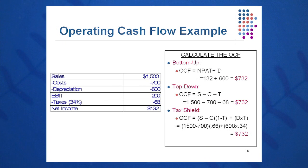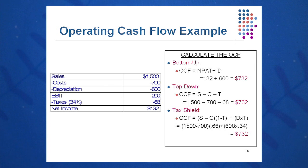You can do a sample income statement and look at all four methods and you should come up with the same answer. Use the traditional approach on this income statement: take EBIT of 200, plus depreciation of 600, minus taxes of 68, and you will get 732. Do the bottom up — NPAT plus D — 132 plus 600, and still get 732, and so on.